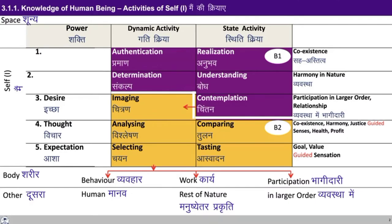Looking at the self, we can see that there are 10 activities in the self in two blocks: Block B1 and Block B2. In Block B1 we have the activities of realization, authentication, understanding, determination and contemplation. In Block B2 we have the activities of imaging, comparing, analyzing, selecting and testing, and we had studied the content of these activities. We can also see that on the basis of imagination in the self, that is in Block B2, we have behavior, work and participation in the larger order.